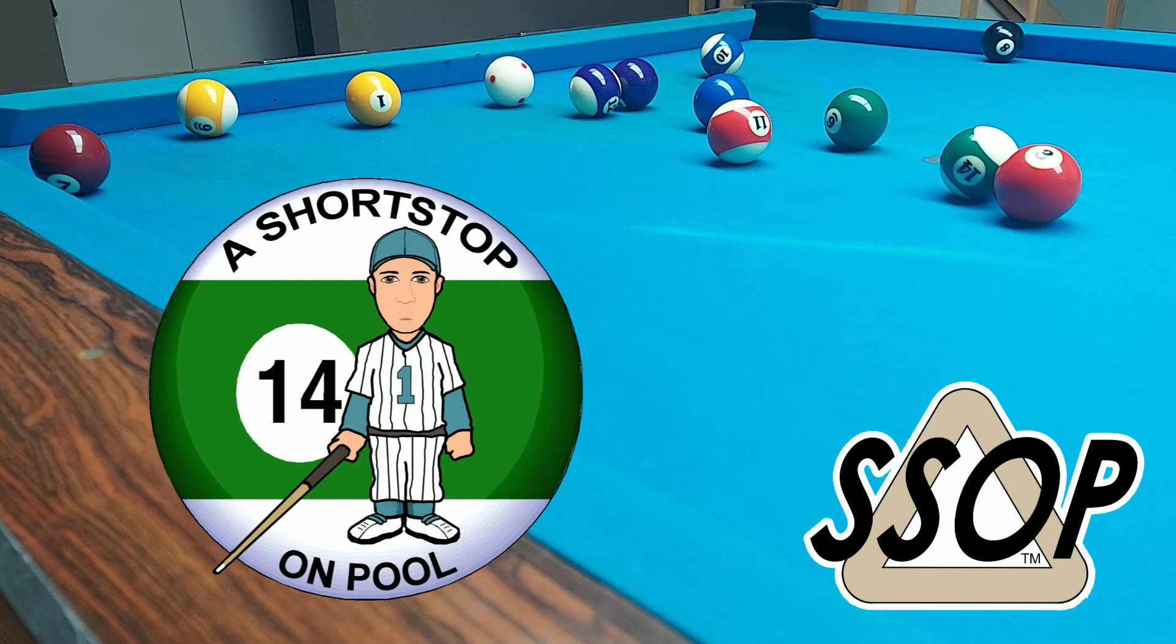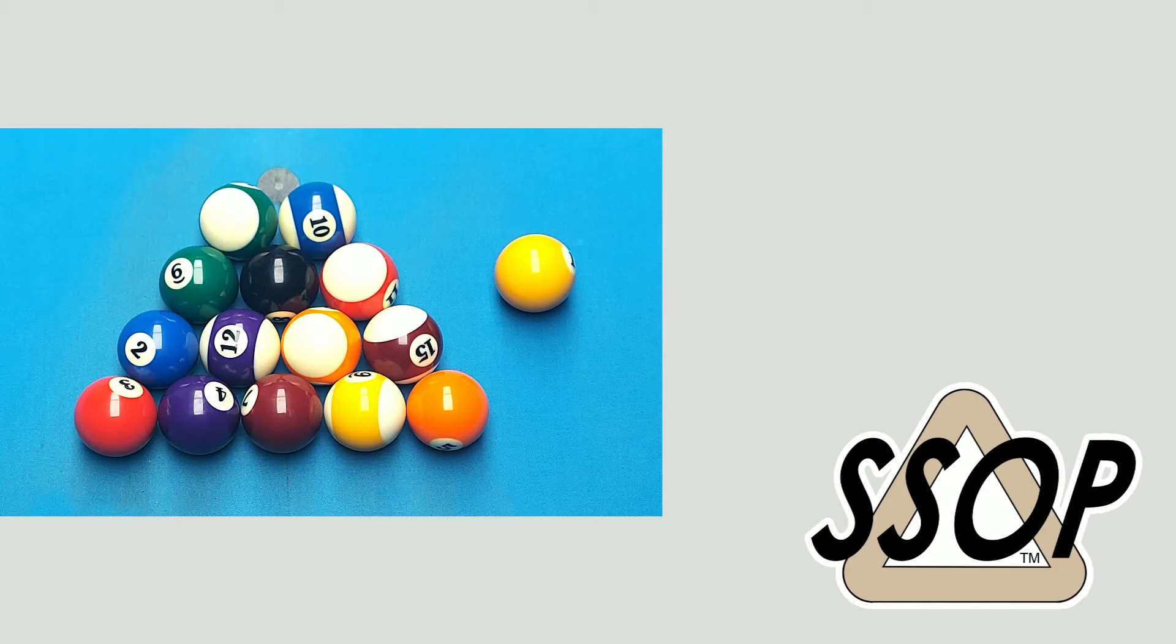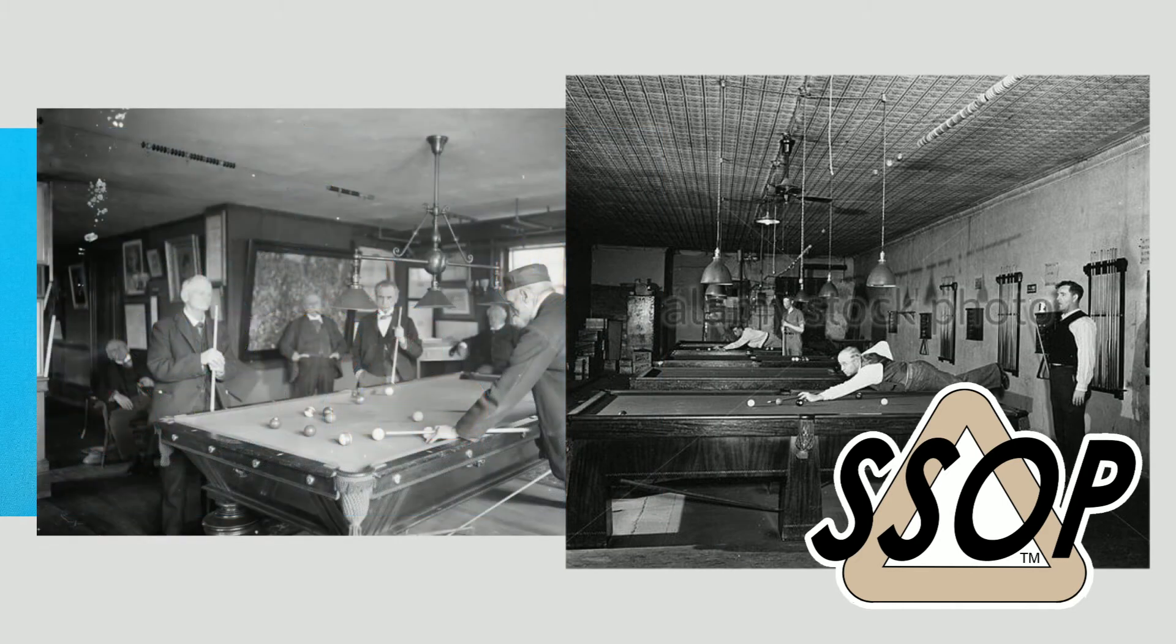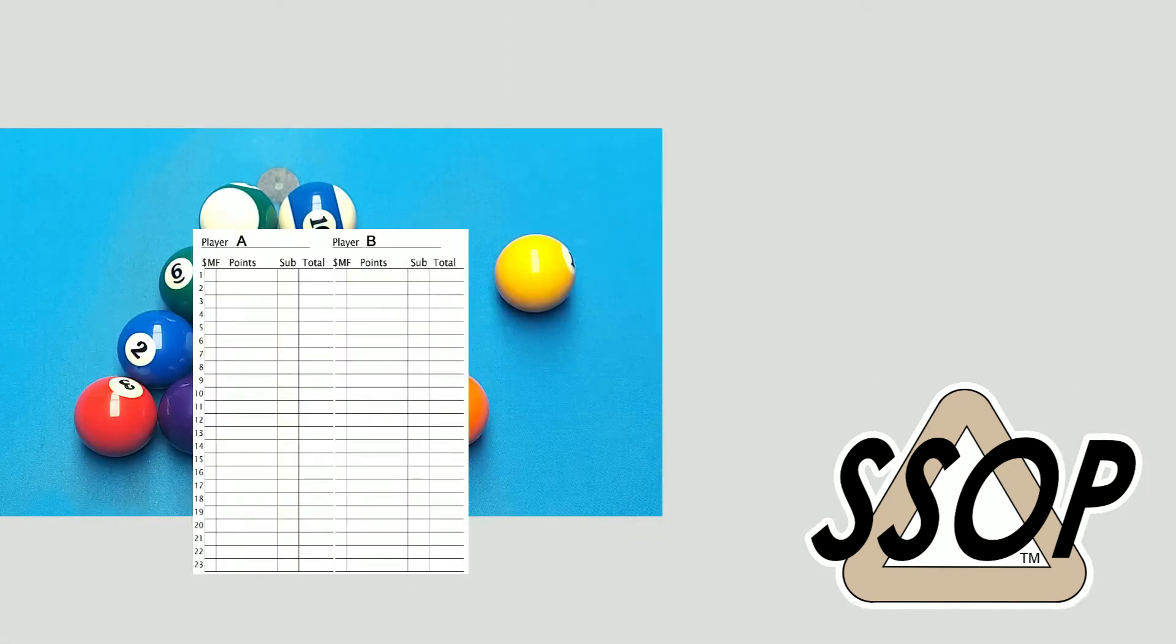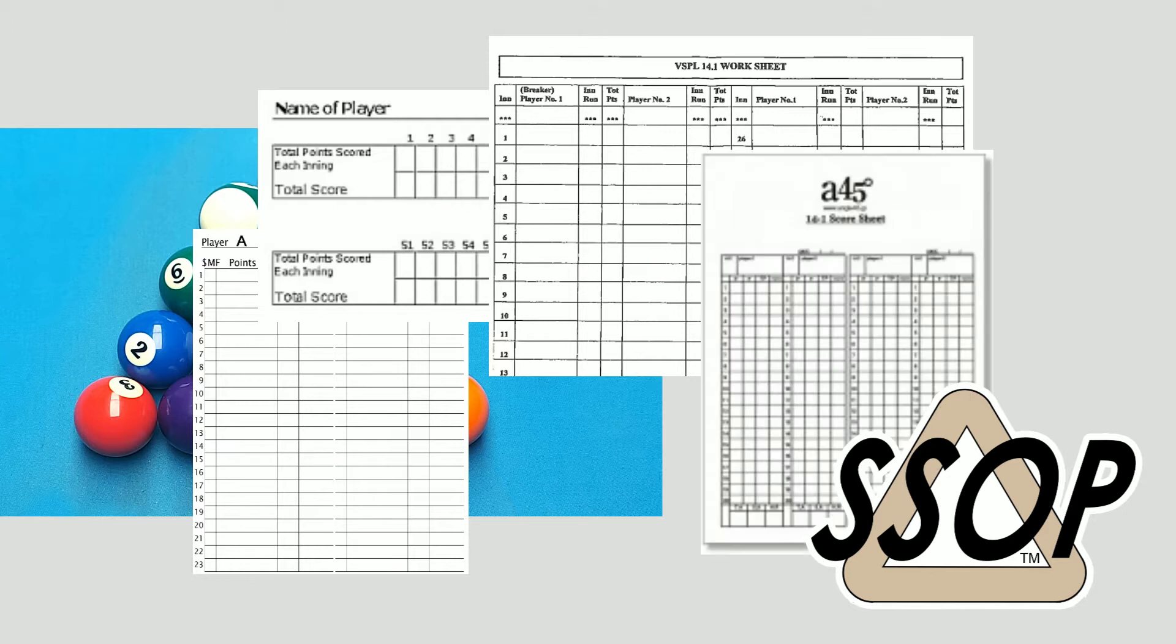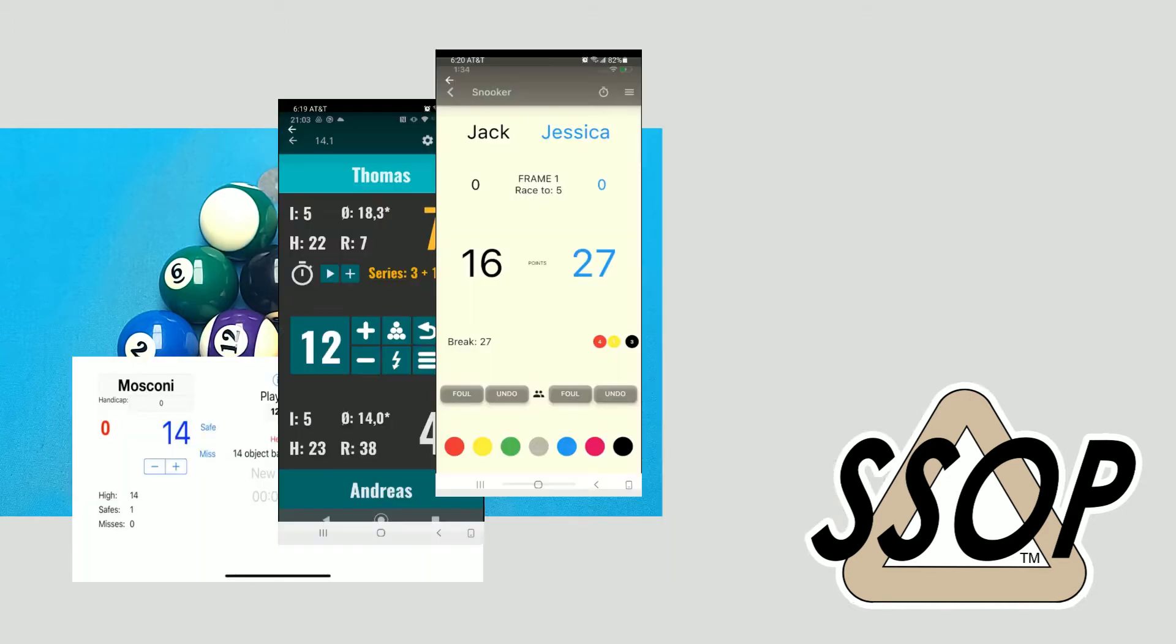Hello, my name is Bob. Welcome to a short stop on pool. There are many tools for keeping score of straight pool games. Historically, players used numbered beads strung above the table. Many tables have rotating number wheel counters. There are paper score sheets in countless formats, and now, quite a few apps for your smartphone.